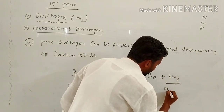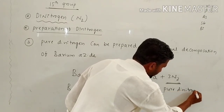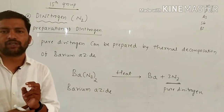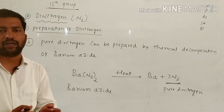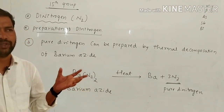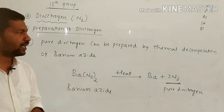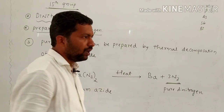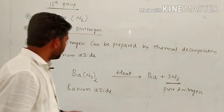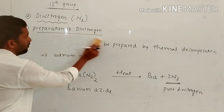This gives the pure form of di-nitrogen. These are the three preparations of di-nitrogen: first, the laboratory preparation combining aqueous ammonium chloride and sodium nitrite; second, thermal decomposition of ammonium dichromate; and third, thermal decomposition of barium azide for the pure form.